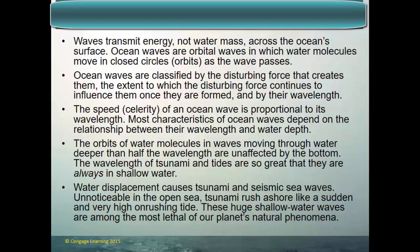Ocean waves are classified by the disturbing force that creates them, the extent to which the disturbing force continues to influence them once they are formed, and by their wavelength. The speed of an ocean wave is proportional to its wavelength, and most characteristics of ocean waves depend on the relationship between their wavelength and the depth of the water in which they're traveling.